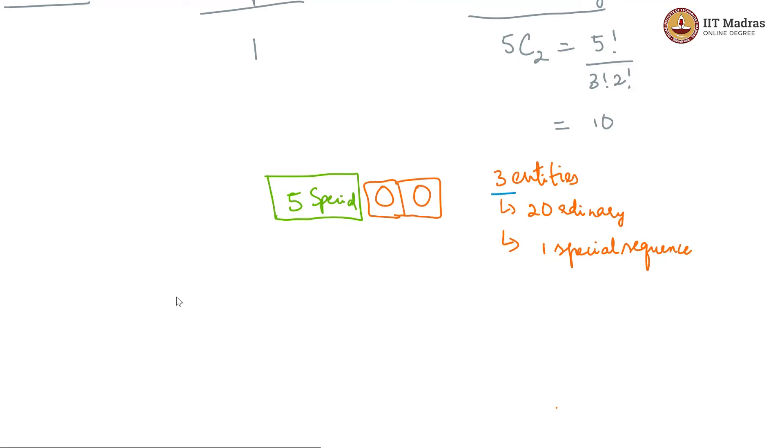Now these 3 entities can be permitted in 3 factorial ways and within them our special sequence has 5 factorial permutations within itself. Each of our 3 entity permutations gets 5 factorial permutations. And then the picking of these 2 ordinary dishes happens in 10 ways. We further multiply this by 10 which is basically 5C2. And this should be our answer for the case 1.